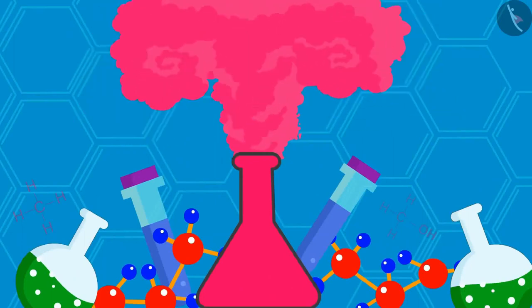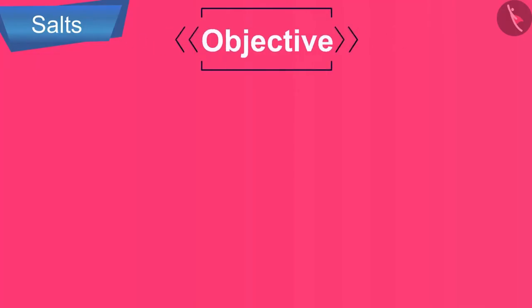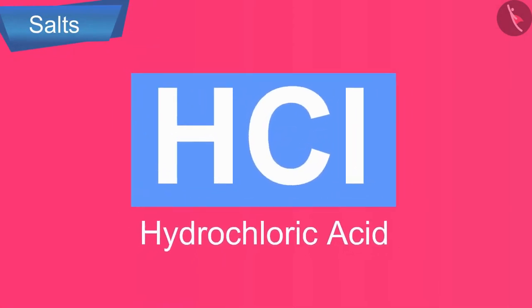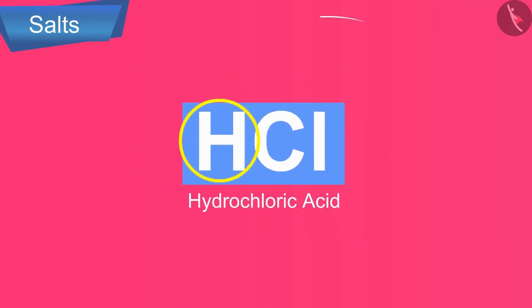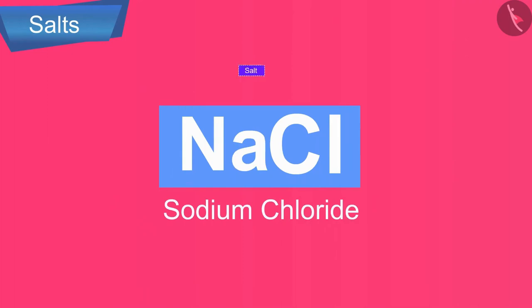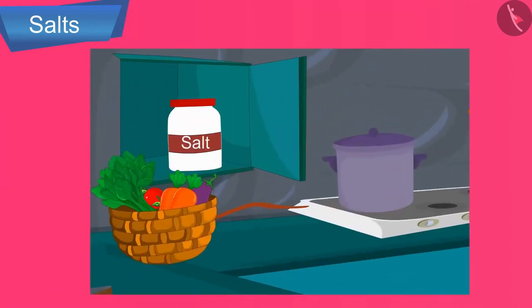Welcome to this video session. The topic we are going to cover in this session is salts. A salt is a compound formed from an acid by the replacement of the hydrogen in the acid by a metal. For example, hydrochloric acid is HCl — if we replace the hydrogen by sodium, we get NaCl, sodium chloride. This is the best known salt and the same salt we use in the kitchen, known as common salt.